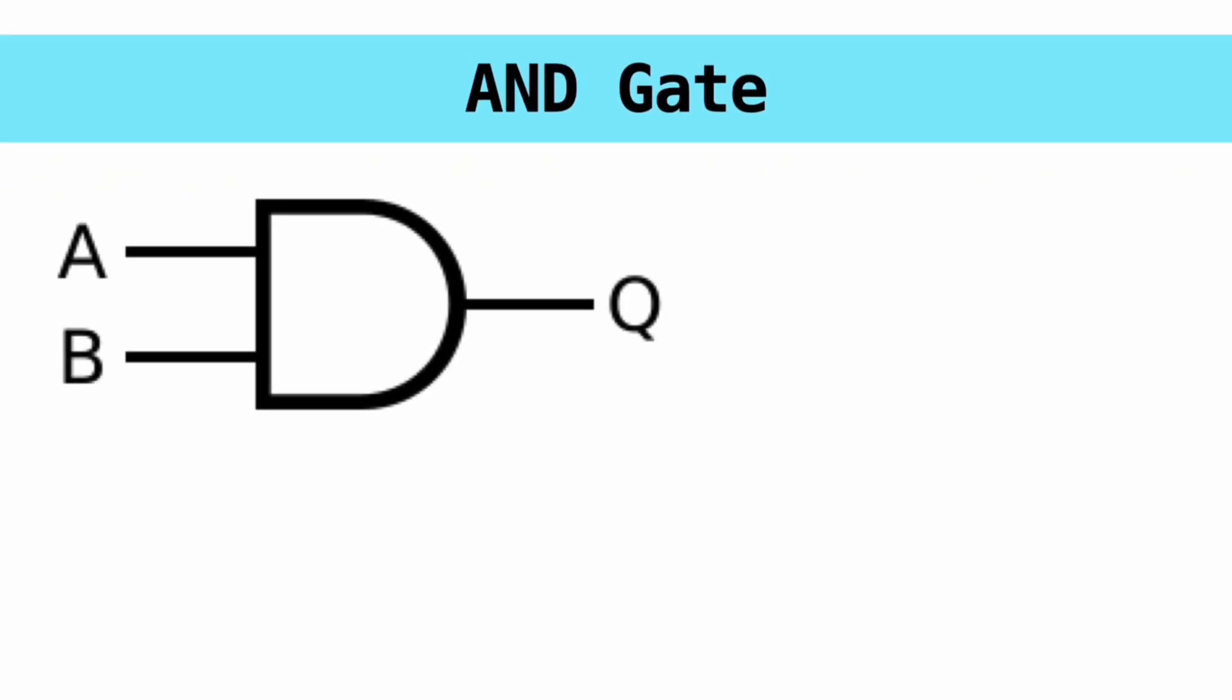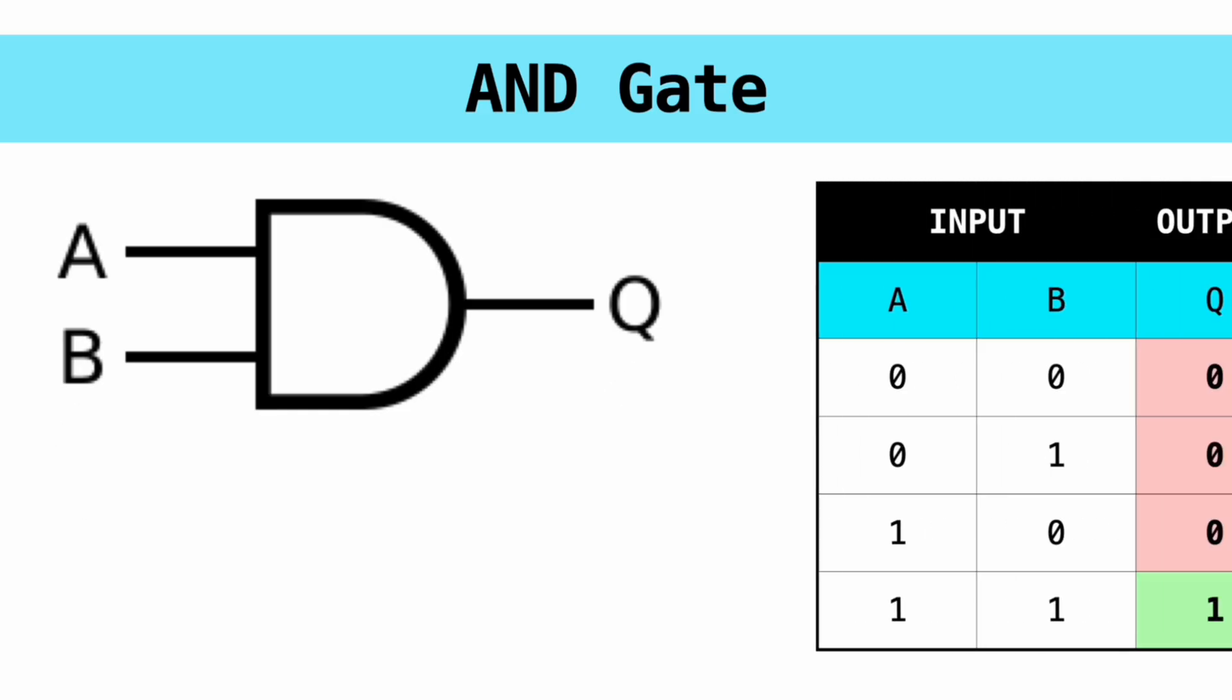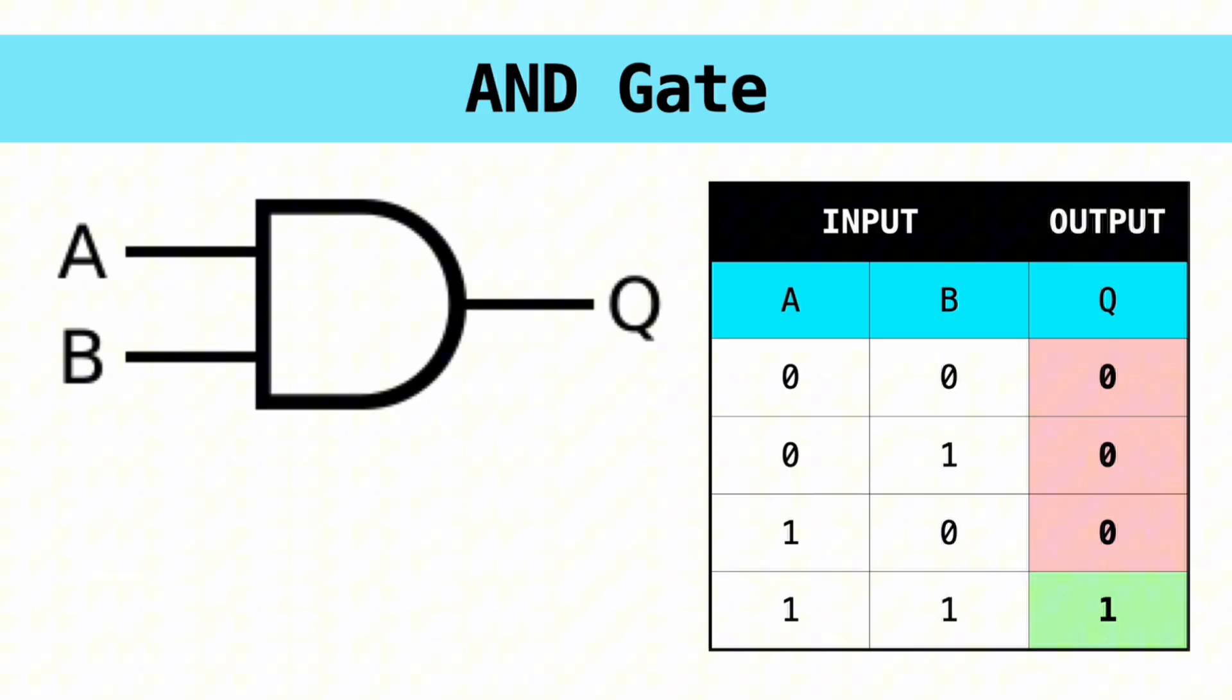Next is the AND gate. Its diagram looks like this, and as you can see, the gate takes 2 inputs and produces 1 output. The way that this gate works is that both the inputs have to be 1 for the output to also be 1. Otherwise, the output will always be 0.